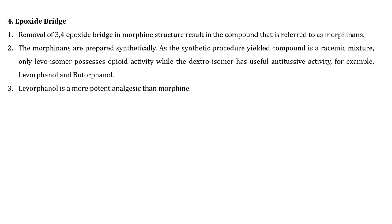Epoxide bridge: removal of the 3,4-epoxide bridge in the morphine structure results in compounds referred to as morphinans. The morphinans are prepared synthetically. Only levo-isomers possess opioid activity, while the dextro-isomers are useful for antitussive activity. For example, levorphanol and butorphanol. Levorphanol is a more potent analgesic than morphine.